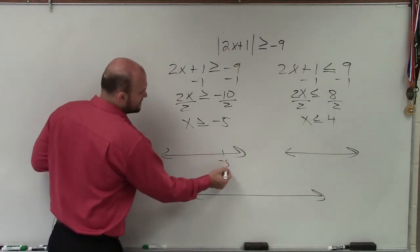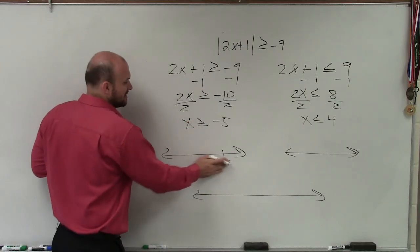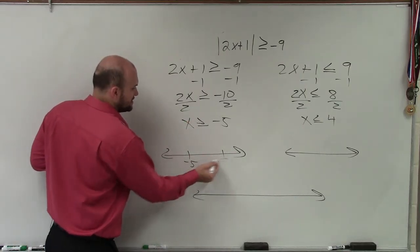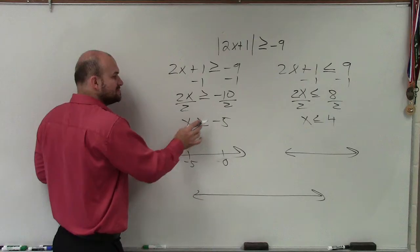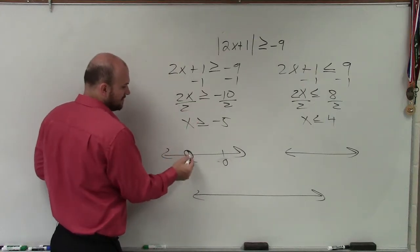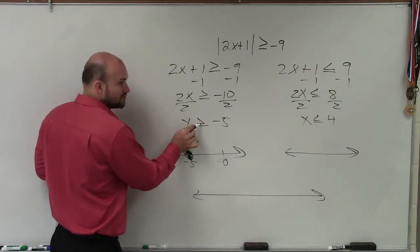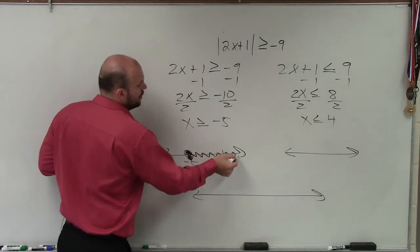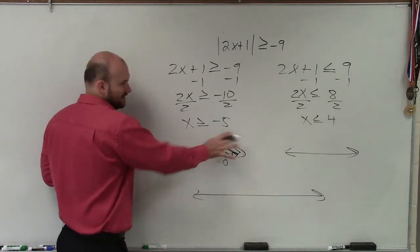So at negative 5, let's say here's negative 5, I need to graph all the terms. Let's do it over here, actually. Let's say negative 5, 0. I need to graph all the terms that are greater than negative 5. So I'm going to fill that in, because it's greater than or equal to, and then it's going to be all the terms going past 0 in this direction.